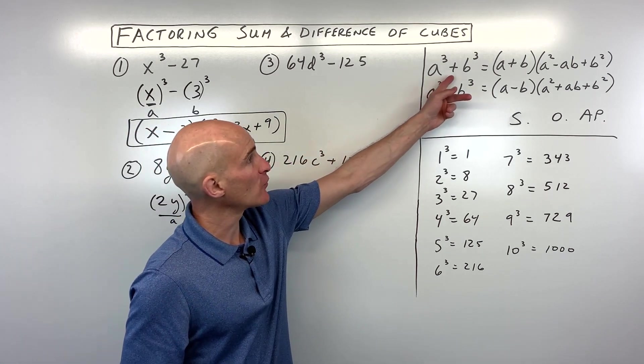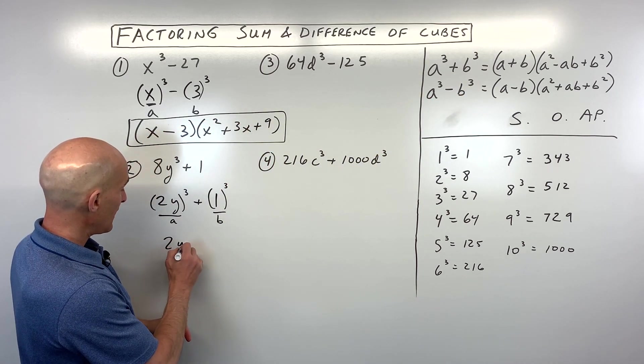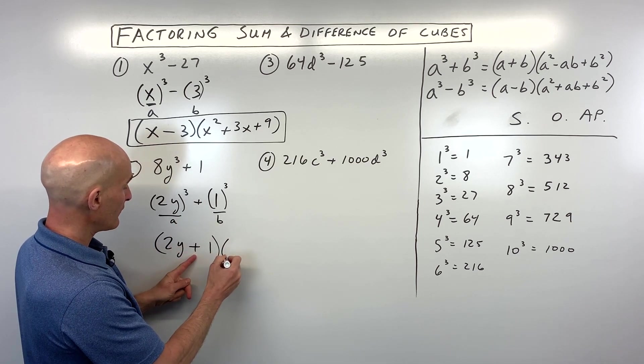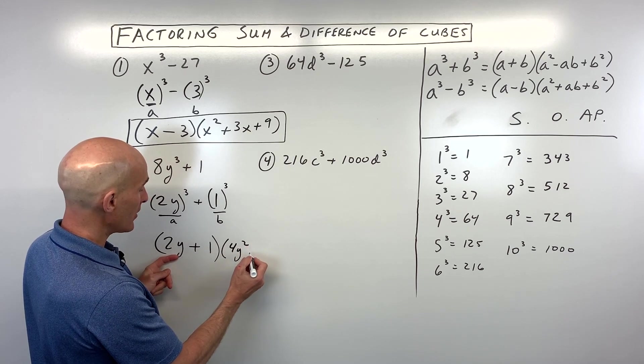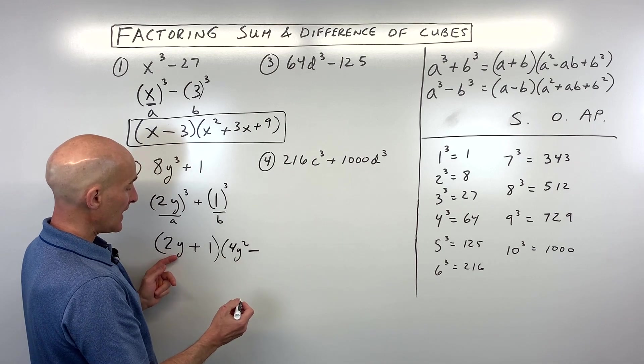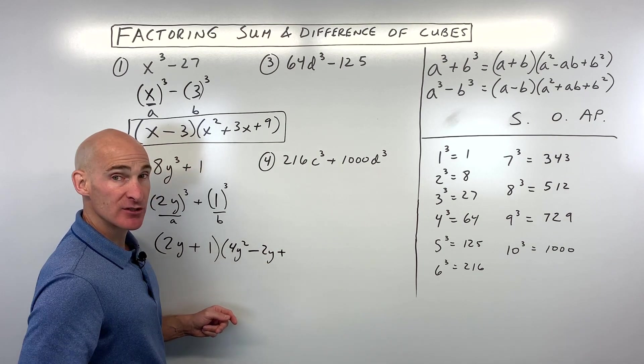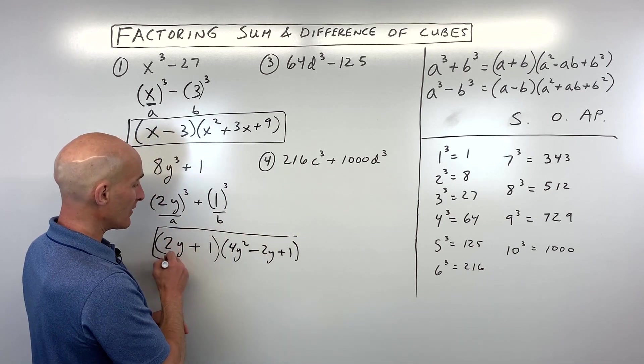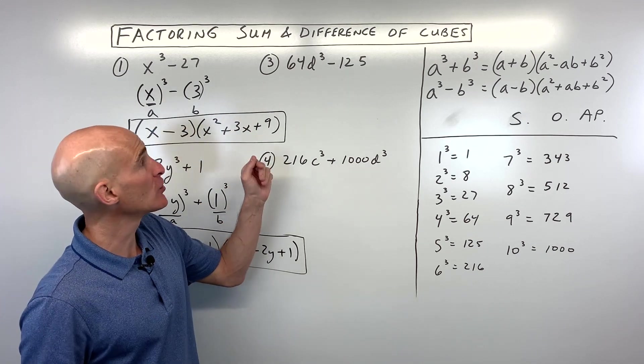We're adding, so we're going to use this formula at the top, and we're going to follow that SOAP acronym. So we've got a + b. This is the same. We're adding. Then we've got a², so 2y times 2y is 4y². Because this was adding, we want to now do the opposite, minus a times b, which is 2y. And the last is always going to be positive, b². So 1 times 1, which is 1. And now you've got it fully factored. See if you can do number 3 and 4. We're going to go through them together.